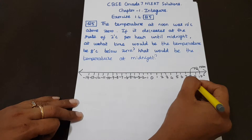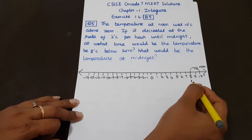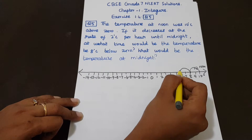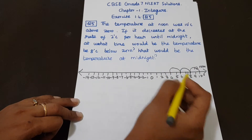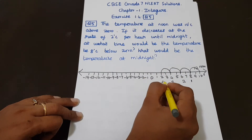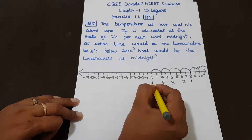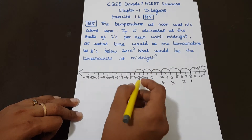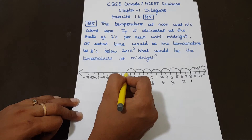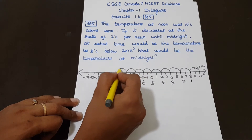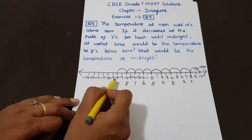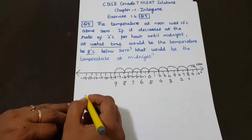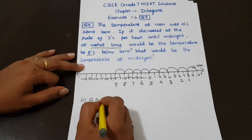So at 1 o'clock after noon: 8 degree Celsius. At 2 o'clock: decrease by 2. At 3 o'clock: decrease by 2. At 4 o'clock: decrease by 2. At 5 o'clock: decrease by 2. At 6 o'clock: 2 degree Celsius. At 7 o'clock: decrease by 2. At 8 o'clock: decrease by 2. At 9 o'clock: decrease by 2.